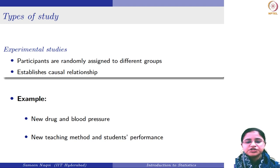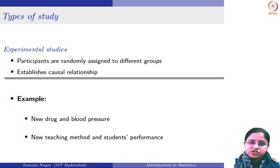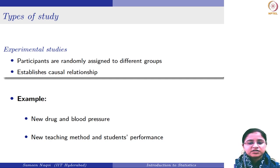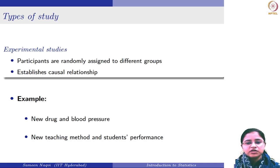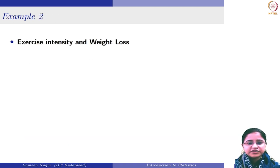Another example is teaching methods and student performance. A school is interested to see the impact of different teaching methods on students' performance. They can take a group of students, randomly divide them into two groups — one assigned the traditional teaching method, the other assigned online tutorials. At the end they conduct an exam to see the impact. They also conduct an initial exam to establish the baseline performance. By randomly assigning students, they have taken care of any confounding variables.